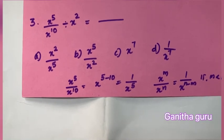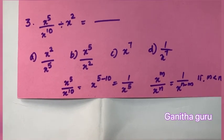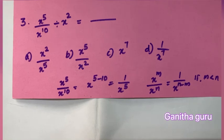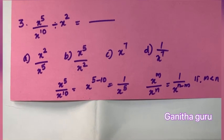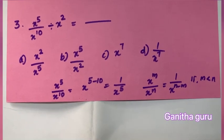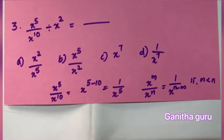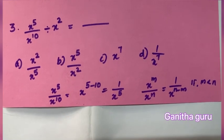Next question: x raised to 5 divided by x raised to 10 divided by x raised to 2. We have 4 options.